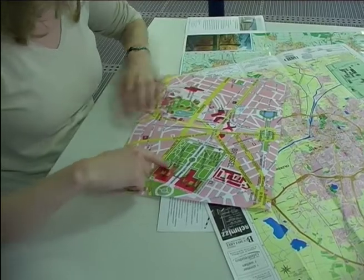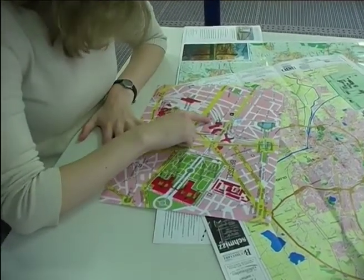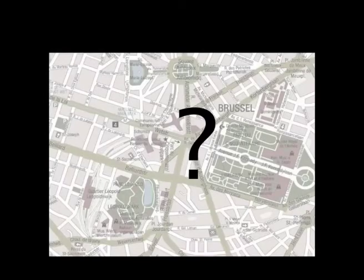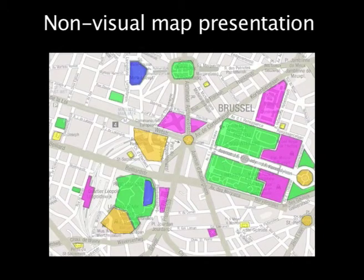But what if we were blind or visually impaired? Then, access to visual maps becomes very difficult, if not impossible. So what is needed is an information presentation which allows a blind or visually impaired user to access the same map information as a sighted person.